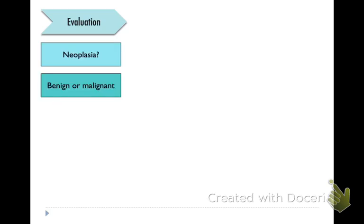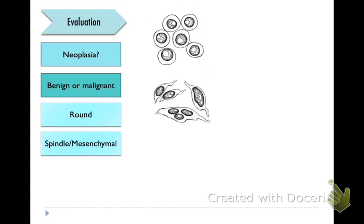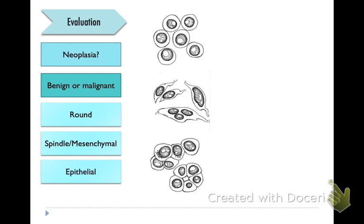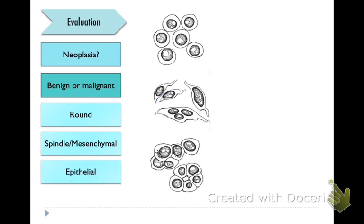In terms of neoplasia being benign or malignant, we can have populations that are round cell populations in which we have individualized cells that are discrete and dispersed. We can have spindle cell populations or mesenchymal populations in which they have a spindled shape, often with little tails. And then we can also have epithelial populations in which the cells aggregate into islands and they have cell-cell junctions — they can arrange in acinar structures or in clumps that are cohesive to each other.